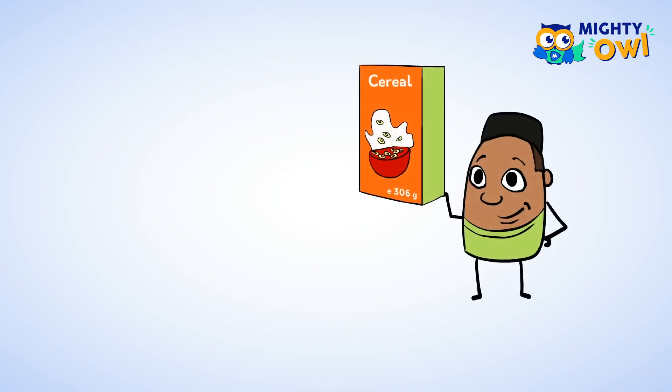Take a look at this cereal box. Take a look at the bottom. You can see it says 306 g. This means that the mass of the cereal is 306 grams.